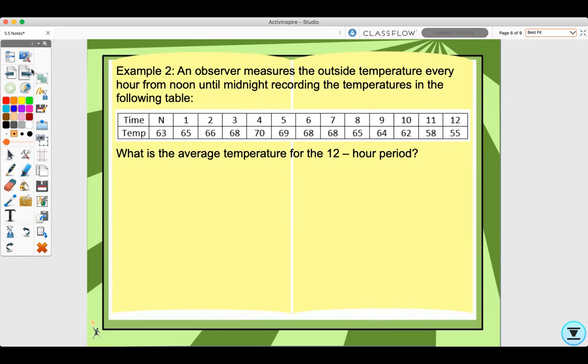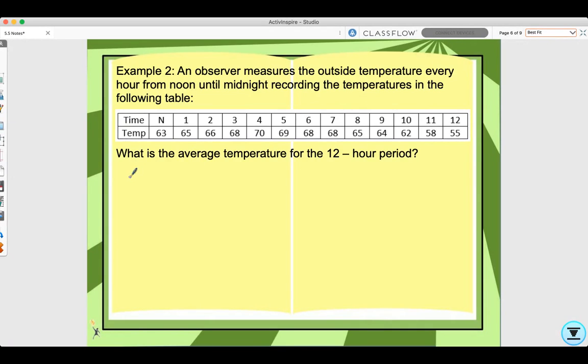Let's look at example two. An observer measures the outside temperature every hour from noon until midnight, recording the temperatures in the following table. What is the average temperature for the 12-hour period? These have equal subintervals as well. So if it's the average temperature over a 12-hour period, it would be 1/12 from 0 to 12 of the temperature dt.